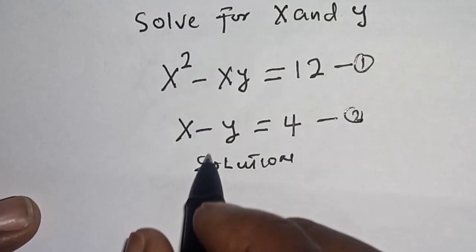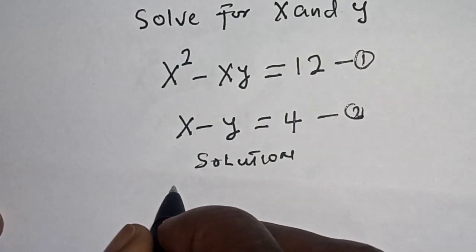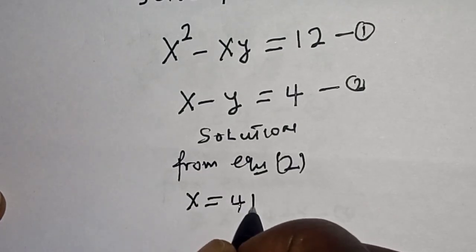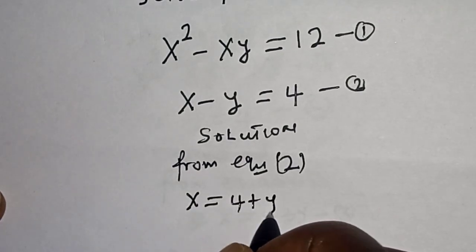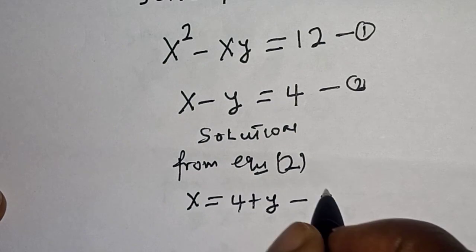Now, from equation 2, let's make x the subject of the formula. x is equal to 4 plus y. This is equation 3.